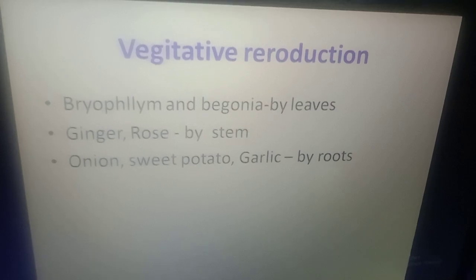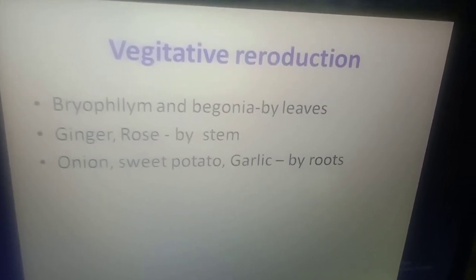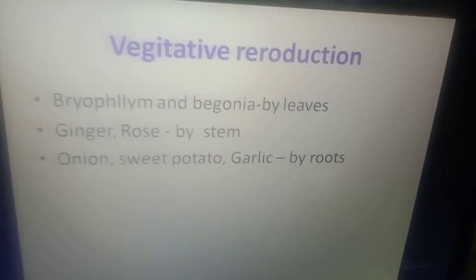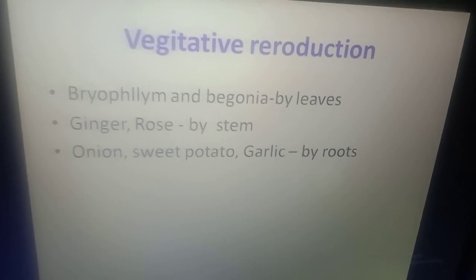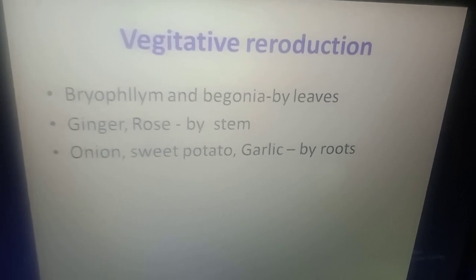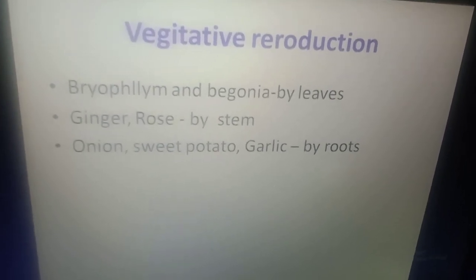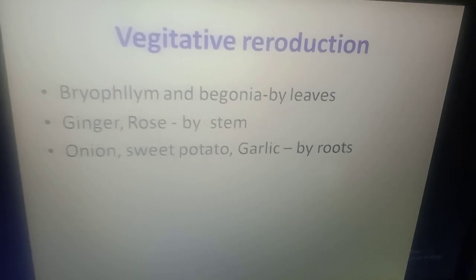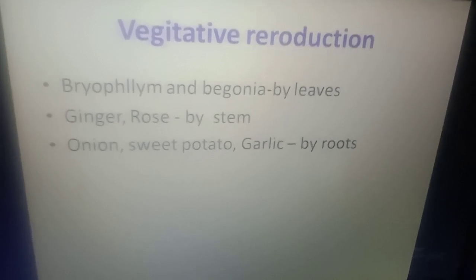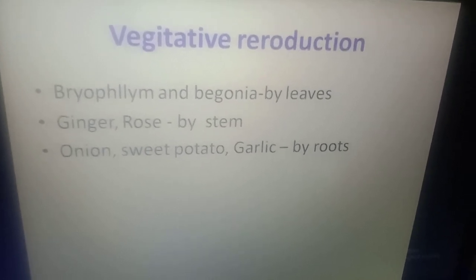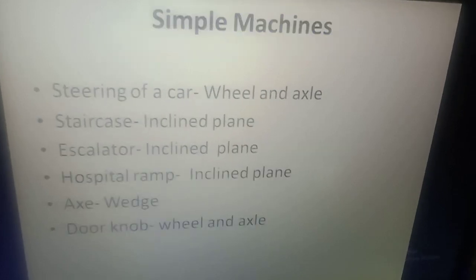Vegetative Reproduction: Bryophyllum and Begonia reproduce by leaves. Ginger, rose, and sugarcane reproduce by stem. Onion reproduces by bulb. Sweet potato and garlic reproduce by roots.